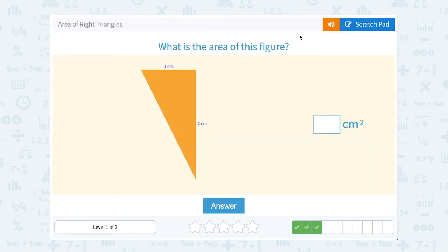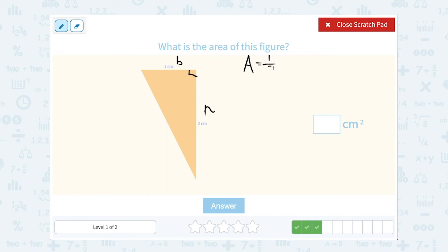What is the area of this figure? Well these two sides look like the base and the height. They appear to make up our 90 degree angle. So when we use our area formula area is equal to one half the base times the height.